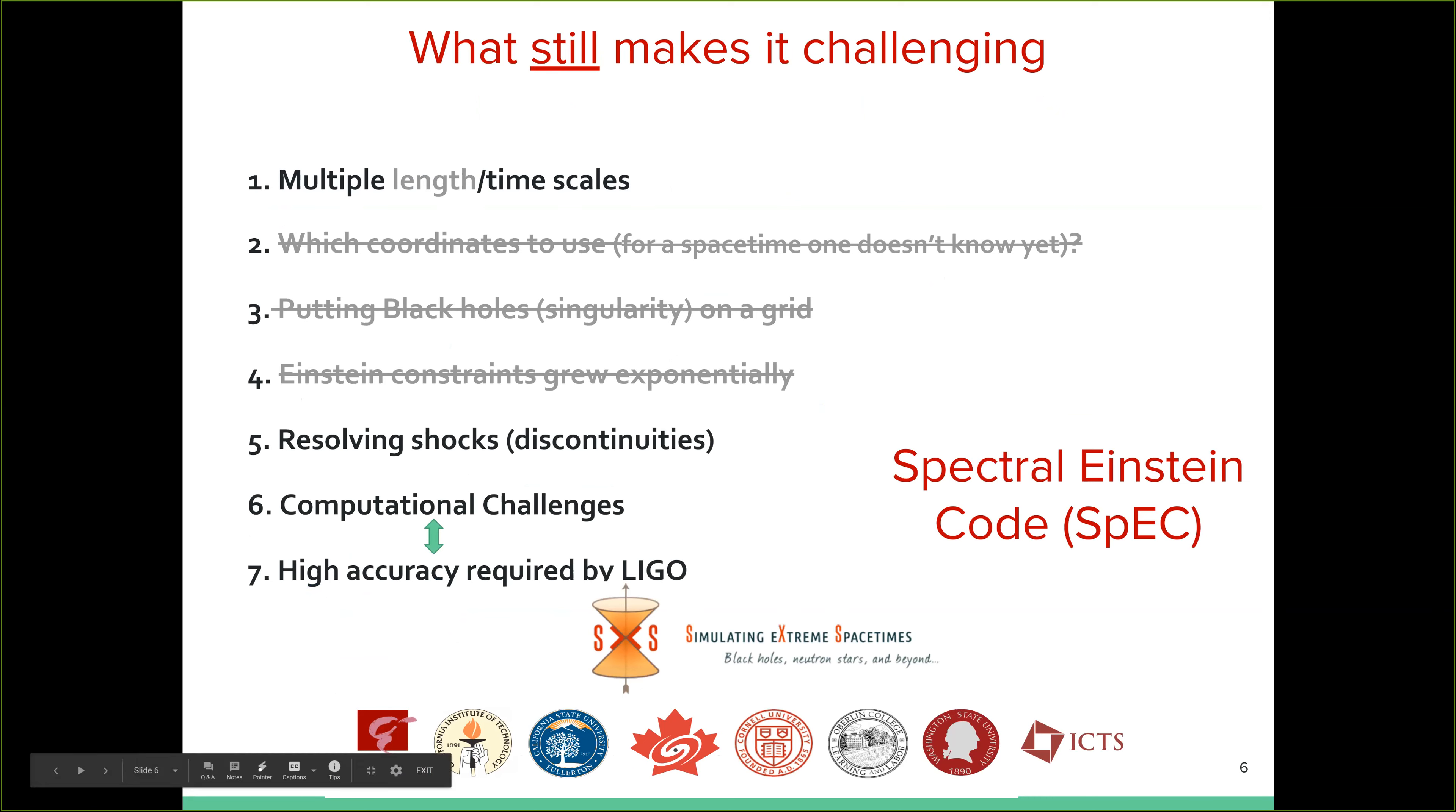And this was developed in collaboration with people at Cornell and Caltech and CITA and Max Planck and California state university and Washington state and ICTS as well. So the problems two, three, and four are currently the most research problems and they have been pretty much solved. We have several ways of representing singularities on a grid. We are not going to go into the details of that. We have several ways of making sure that the constraints of Einstein system don't grow. They remain near as near zero as we want. At least they remain at a control level.